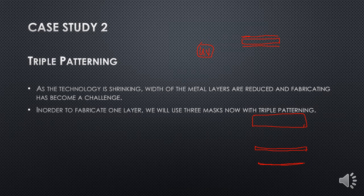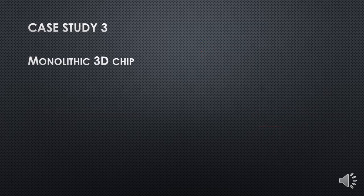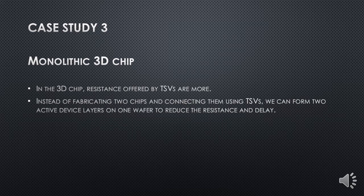Until now, double patterning has been used, but as technology nodes shrink further, triple patterning is also being adopted. To fabricate one layer, three different masks are now used for one shape — that is triple patterning. Regarding the monolithic 3D chip: instead of fabricating two chips and connecting them with TSVs, we can form two active device layers — two different transistors — on one chip, one above the other, eliminating TSVs entirely. That is the monolithic 3D chip, though it involves significant fabrication complexities.